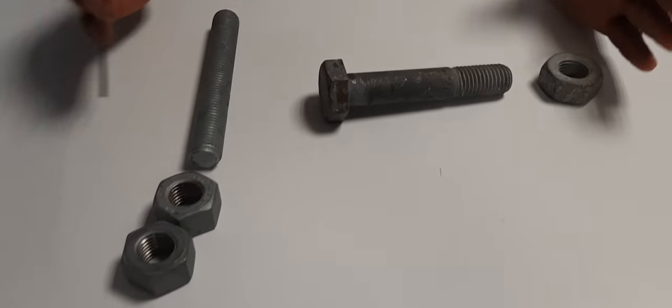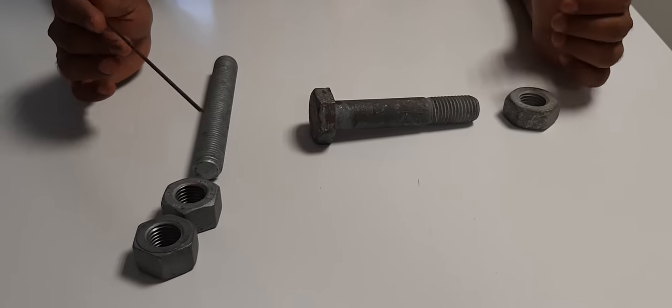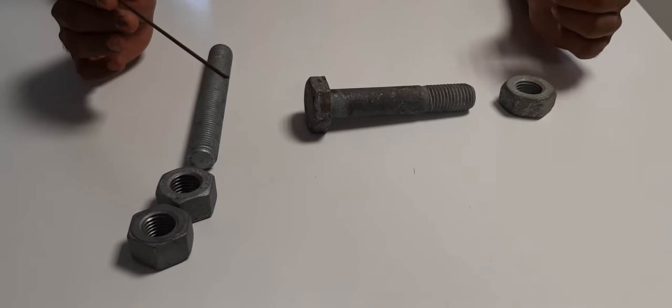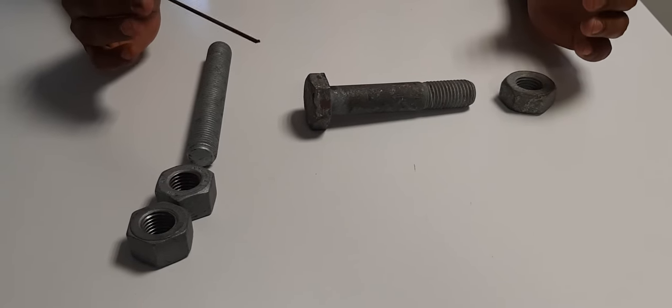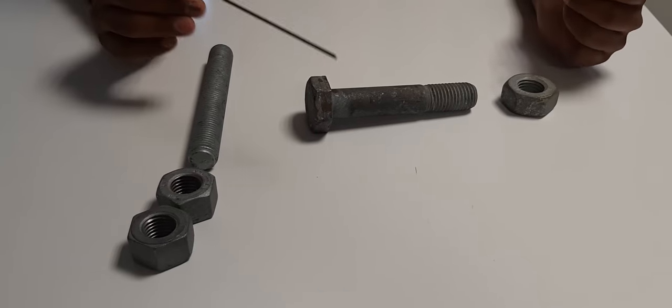Commonly we call it a bolt or fastener. What is a fastener? A fastener is a hardware device that mechanically joins together one object to another object.